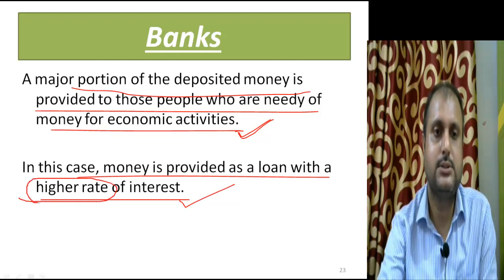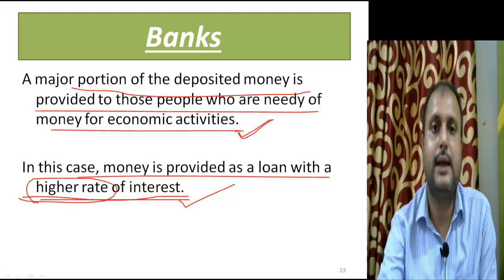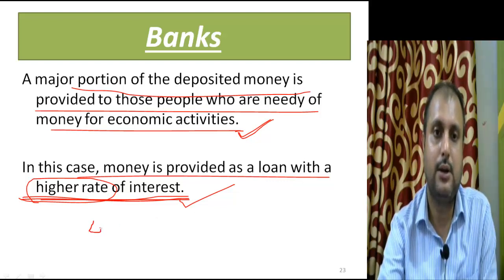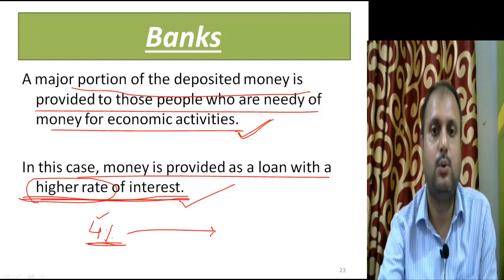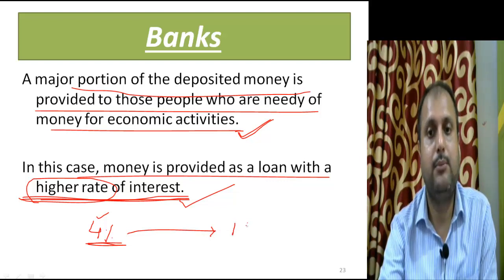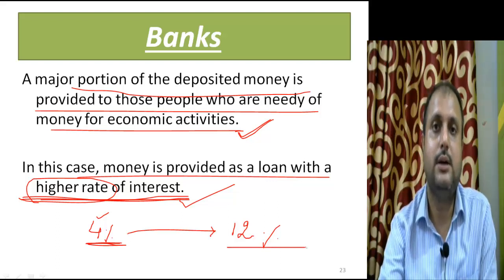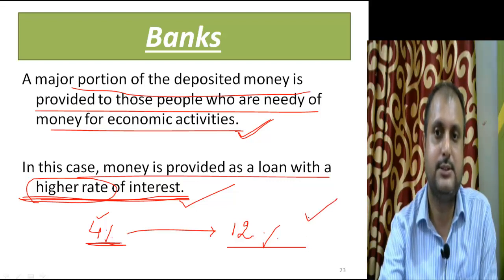The loan interest rate is not arbitrary — it is decided by the RBI itself, but it is higher than the deposit interest rate. If you deposit money in a bank, the interest rate is around 4%. When you take a loan, the interest rate can be above 12%. The difference between the interest you receive on deposits and the interest you pay on borrowings is the income of the bank.